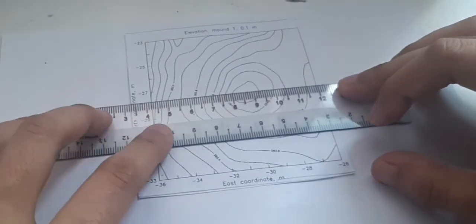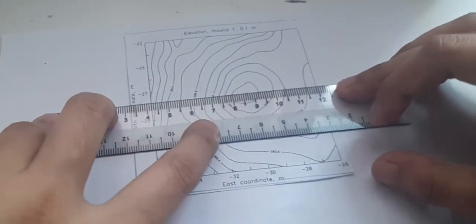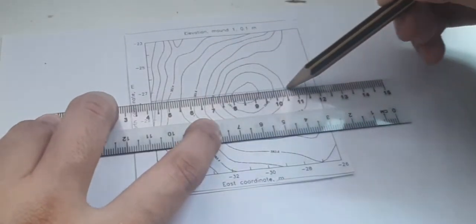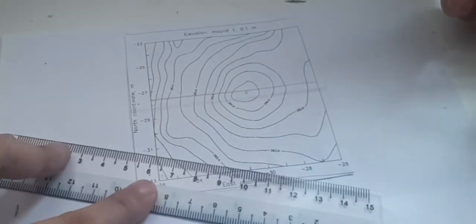So first, you're going to make a horizontal line across the contour map.